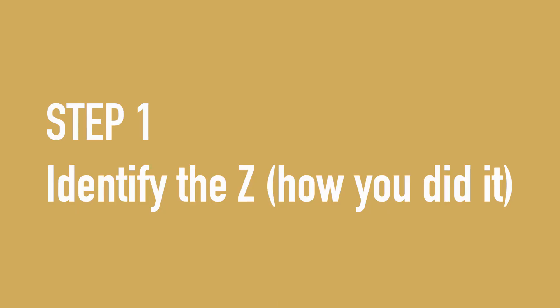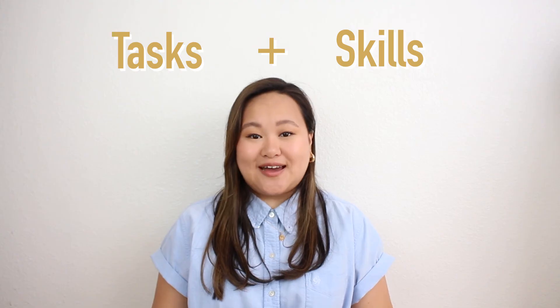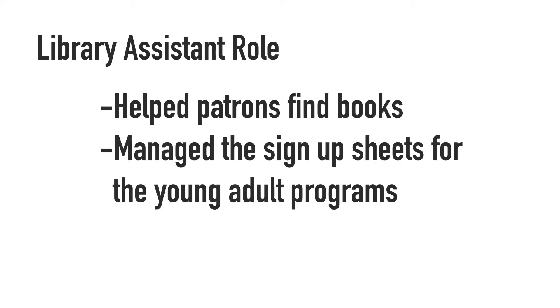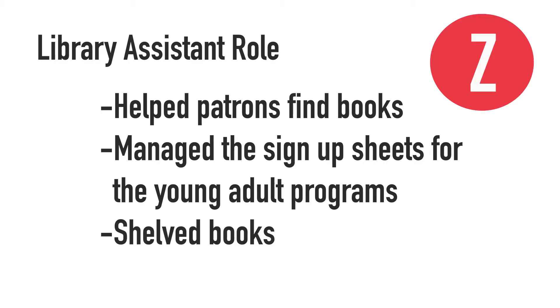Step one is to identify the Z. These are the tasks you performed and the skills you used to complete those tasks. We begin with Z — how you did it — because it is often the easiest to identify first. Let's say I'm trying to create my task list from my previous library assistant job. As a library assistant, I helped patrons find books, managed the sign-up sheet for the young adult programs, and shelved books. These are my Zs for this role.